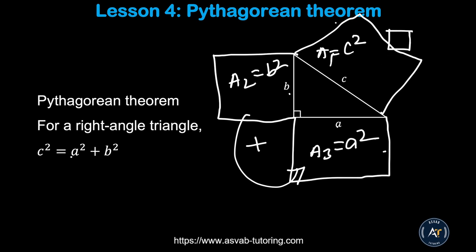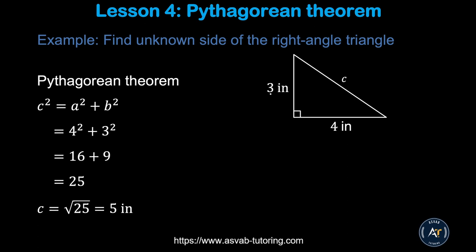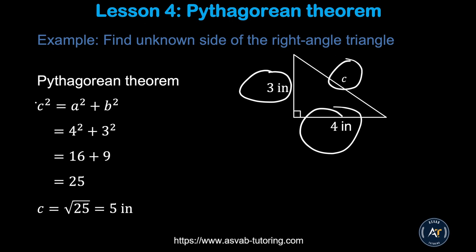Applying the formula to a right triangle with sides 3 and 4: a² + b² = c² gives 9 + 16 = 25, so c = 5. You should know common Pythagorean triples: the 3-4-5 triangle, the 6-8-10 triangle, and the 5-12-13 triangle. If you know any one side of these, you can easily find the others.